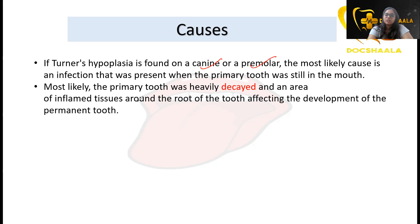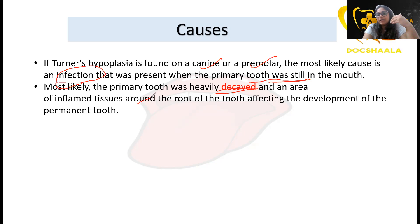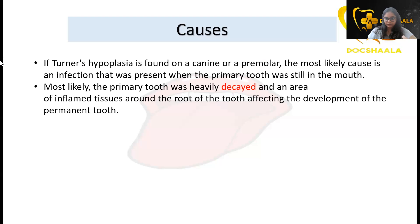When Turner's hypoplasia is found in canines or premolars, the most likely cause is a previous infection present when the primary tooth was still in the mouth. Any infection near the primary tooth — such as heavy decay or periapical lesions like periapical abscess or periapical granuloma — can hinder the development of the successor permanent tooth, leading to problems in enamel development and formation of Turner's tooth.